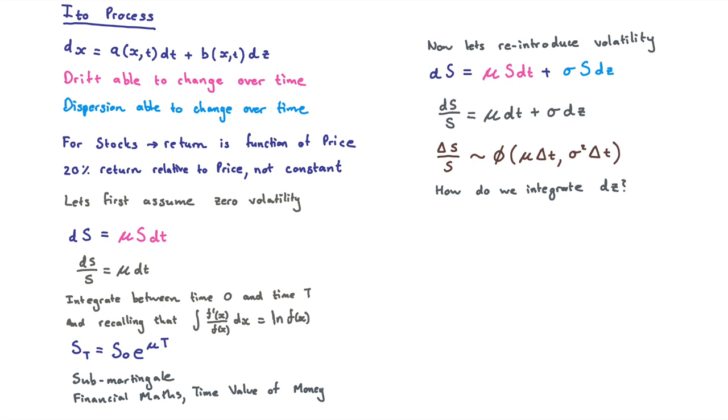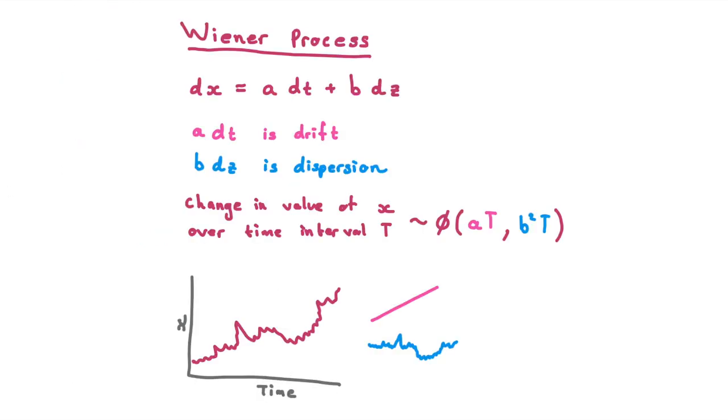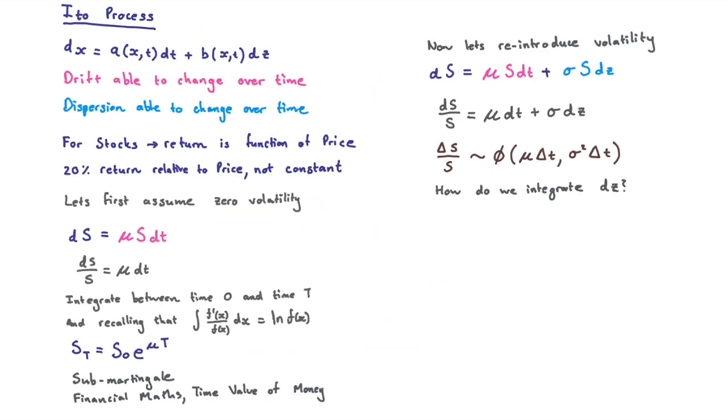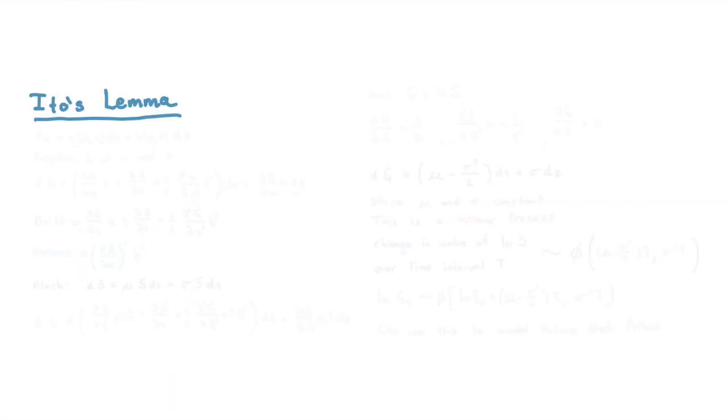Remember, Ito's process is when your drift and your dispersion are functions, unlike with the Wiener process where they were constants. And remember, the Wiener process is just a more generalized version of your Brownian motion or think of this as white noise. So make sure you've seen these three videos and you're comfortable with the theory because now this is where things get difficult.